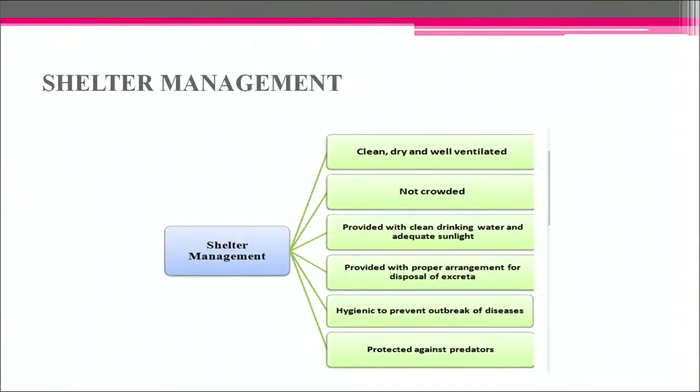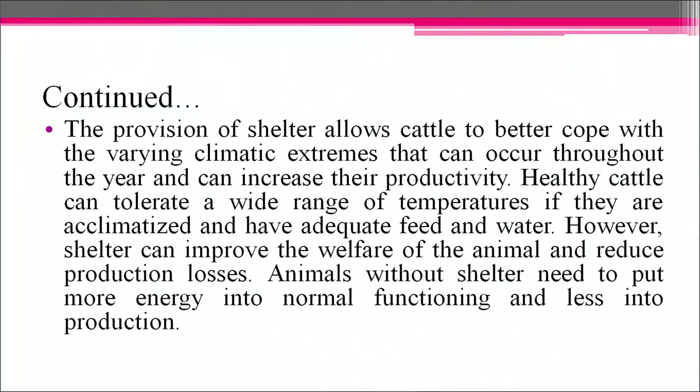Genetic improvement is a major factor contributing to the profitability of production systems for livestock and poultry. Breeding and selection have resulted in significant economic gains in beef, lamb, wool, milk, pork, egg and chicken production. Regarding shelter management, the provision of shelter allows cattle to better cope with varying climate extremes throughout the year and can increase their productivity. Animals without shelter need to put more energy into normal functioning and less into production.